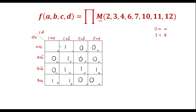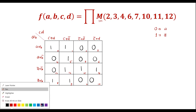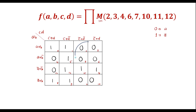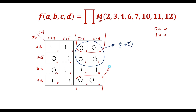In max term simplification, we have to do the grouping of zeros. With cells forming a quad, the first quad covers two rows with common factor a, and two columns with common factor c bar — giving a plus c bar. The second quad covers another row with common factor b and the same columns with common factor c bar — giving b plus c bar.